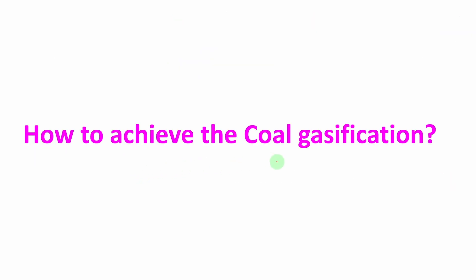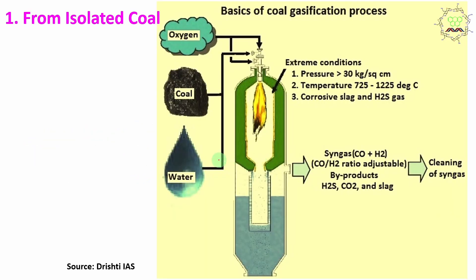How is coal gasification achieved? There are actually two ways. One is from isolated coal — this is carbon reacted with oxygen under very high temperature, around 1000 to 1500 degrees centigrade, and very high pressure — drastic conditions. It produces the same gas mixture, mainly carbon monoxide and hydrogen acting as fuel.